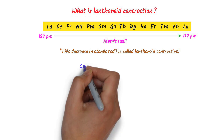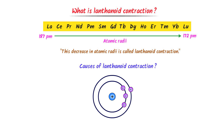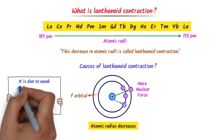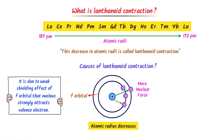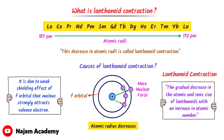The most important question is: what causes Lanthanide Contraction? In atoms of the Lanthanide series, nuclear force leaks from the F orbital and the outer electron gets a strong nuclear pull, so the size of the atom decreases — this is Lanthanide Contraction. It is due to leakage of nuclear force, or the weak shielding effect of the F orbital, that the nucleus strongly attracts the outermost electrons and the size of the atom decreases. We define Lanthanide Contraction as: the gradual decrease in the atomic and ionic size of lanthanides with an increase in atomic number.